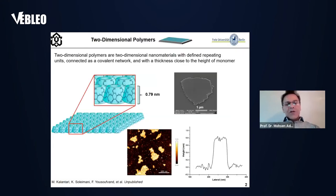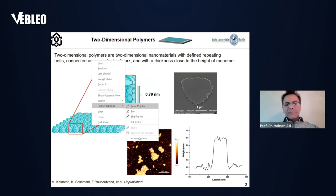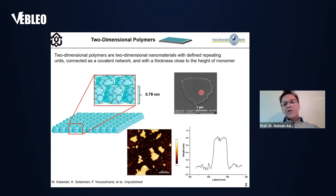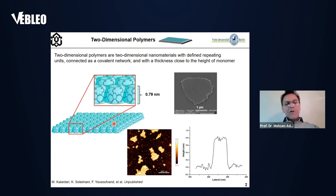But what is a two-dimensional polymer? A two-dimensional polymer is a two-dimensional nanomaterial which has some defined repeating units connected to each other in a sheet-like network covalently, and the thickness of this nanomaterial is the thickness of its repeating unit or the height of its monomer. In this slide, you see a two-dimensional polycyclodextrin with cyclodextrin repeating units connected to each other covalently. The lateral size of this two-dimensional polymer is several micrometers, but the height of these sheets is around 0.8 nanometer, which is close to the height of one cyclodextrin. Therefore, we can consider this compound as a two-dimensional polymer.